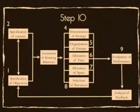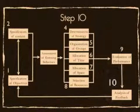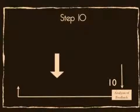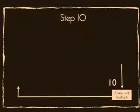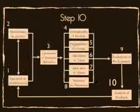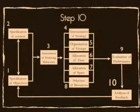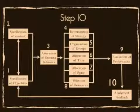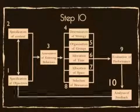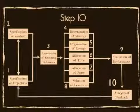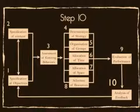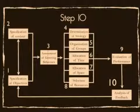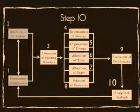In the final step of the model, Analysis of Feedback, the model becomes cyclical and self-sufficient. The instructor must review all of the previous steps and adapt and change to improve the instruction for the future. The arrow at the bottom suggests that the instructor must bring this newfound valuable constructive criticism to the next cycle of instruction.